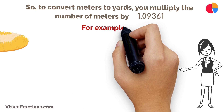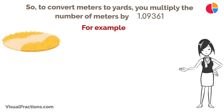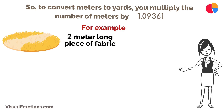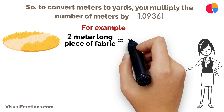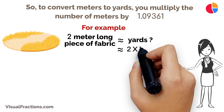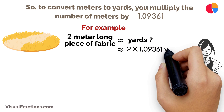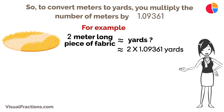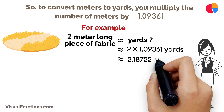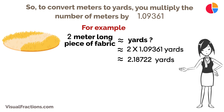For example, if you have a 2 meter long piece of fabric and you want to know its length in yards, just multiply 2 meters by 1.09361. This gives you about 2.18722 yards.